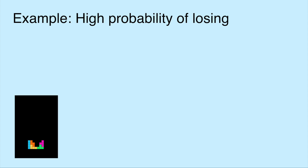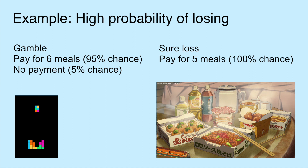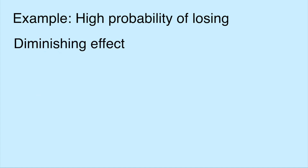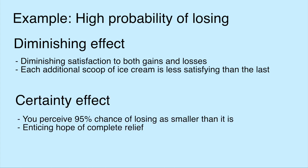Now let's look at a situation where you are faced with a near certain loss. Imagine you are playing Tetris with a friend. You suck at this game and your friend beats you 95% of the time. So far, you owe them 5 dinners. Your friend offers you one last chance where, if you lose, you owe them an additional meal, but if you win, you can wipe your slate clean and owe them nothing. Would you take the bet or leave it at 5 meals? There are two factors at play here. The diminishing effect, where there is diminishing sensitivity to both gains and losses — for example, the first bite of ice cream is always more satisfying than the second. And the certainty effect: you perceive the 95% highly likely chance of losing as smaller than it is. There is this enticing hope of complete relief. Both of these factors push you to take the gamble instead of taking the short loss.